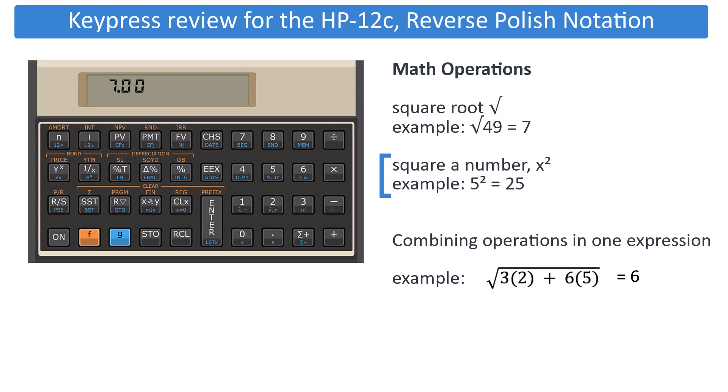To square a number, we enter in both the base and the exponent, and then use the exponent key marked Y to the X.